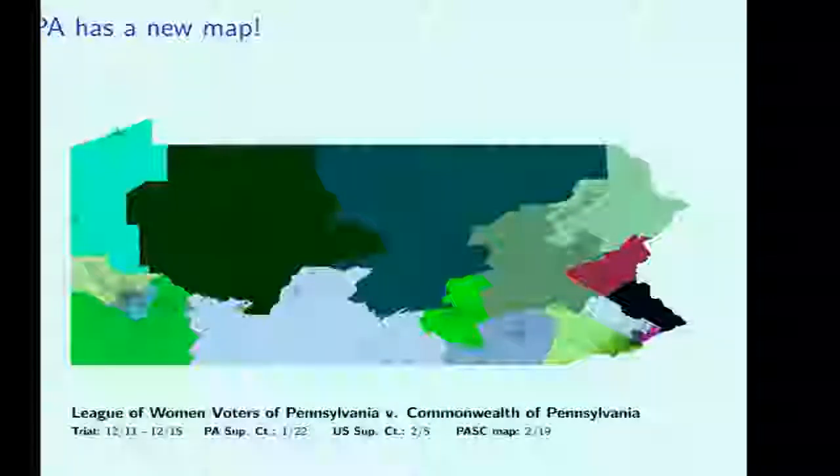The Supreme Court ruled initially in January that the district was an unconstitutional partisan gerrymander. The legislative respondents filed for an emergency stay at the U.S. Supreme Court, which was denied on February 5th. The Pennsylvania Supreme Court adopted a new map on February 19th, and after one more emergency stay was denied on March 19th, the issue was finalized. This all changed very quickly.